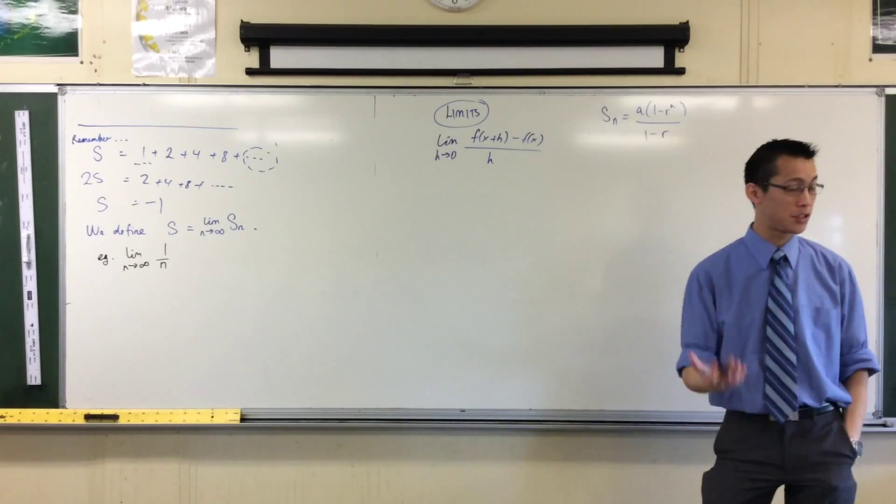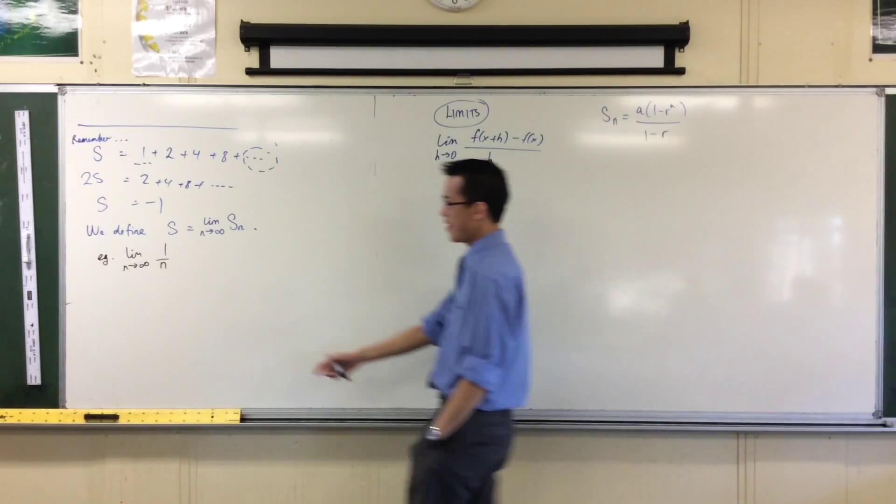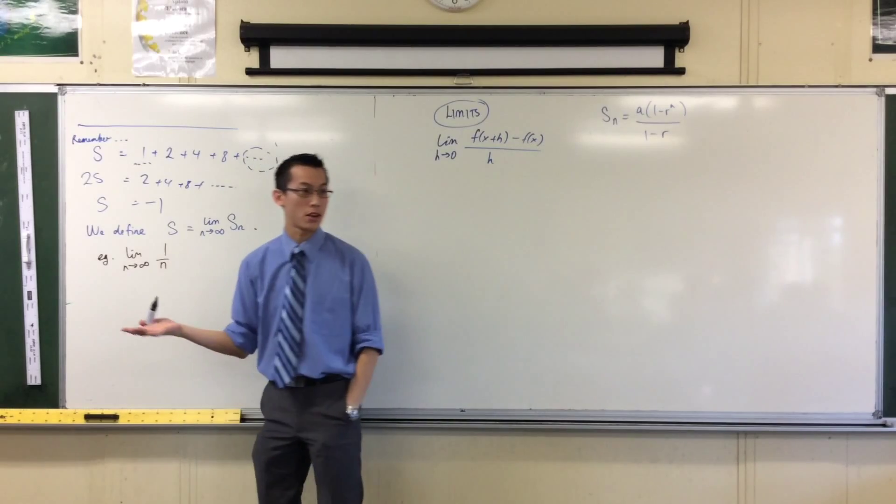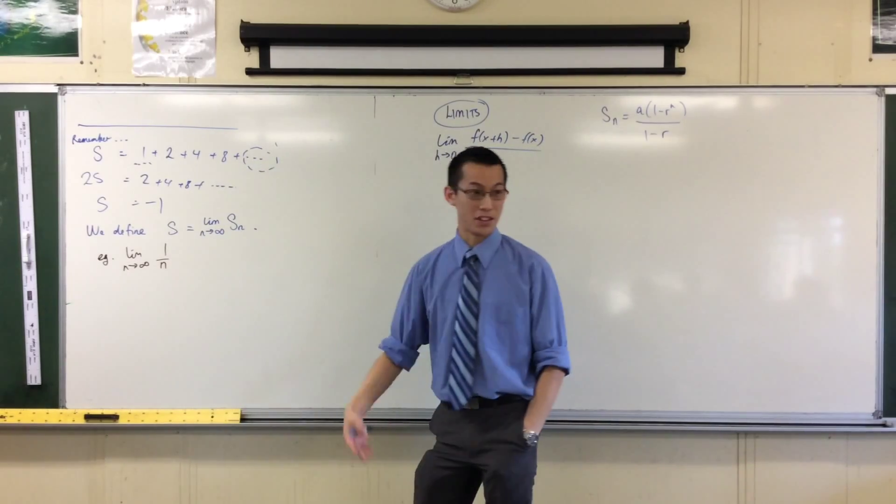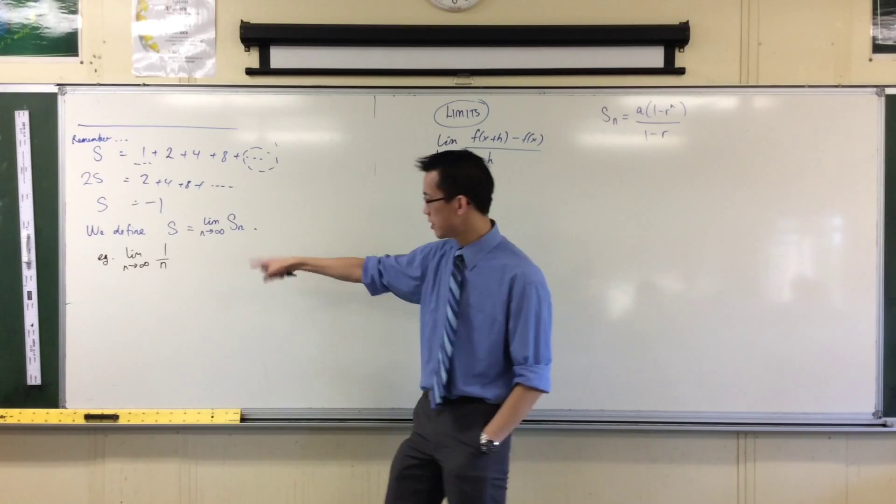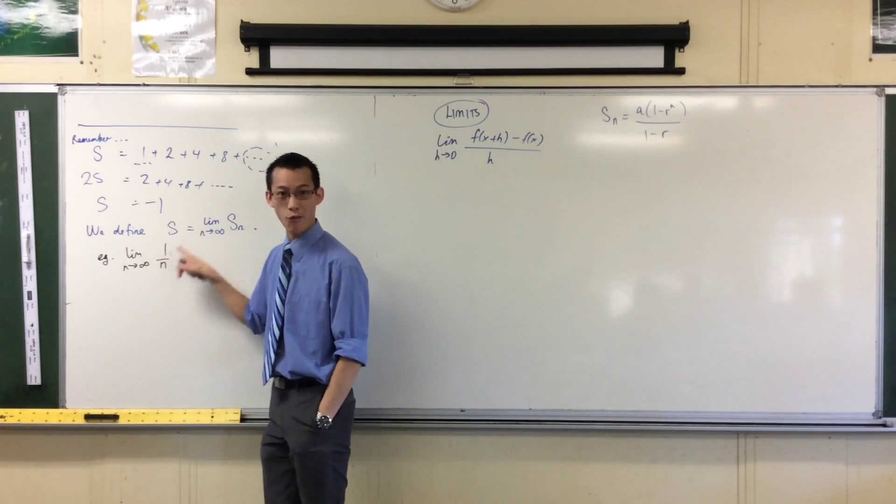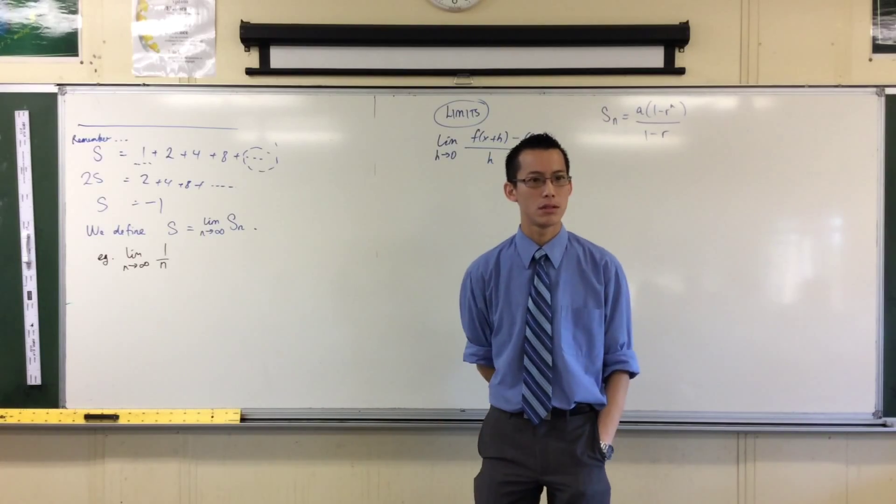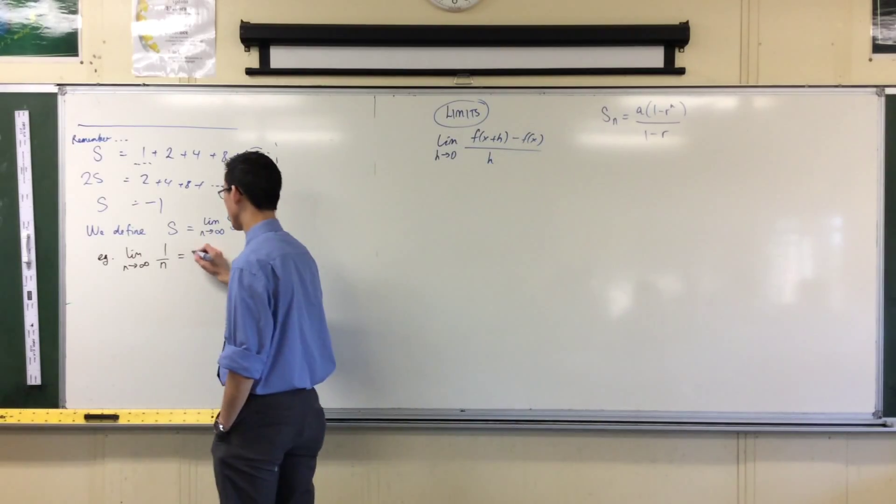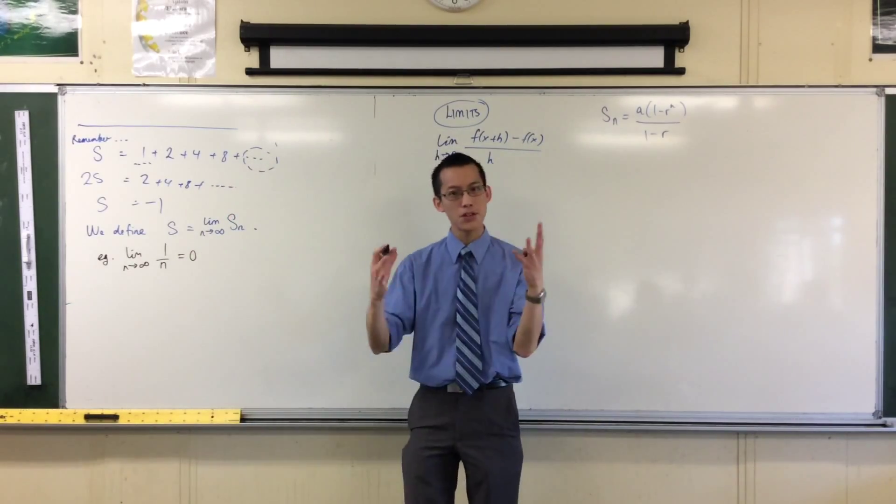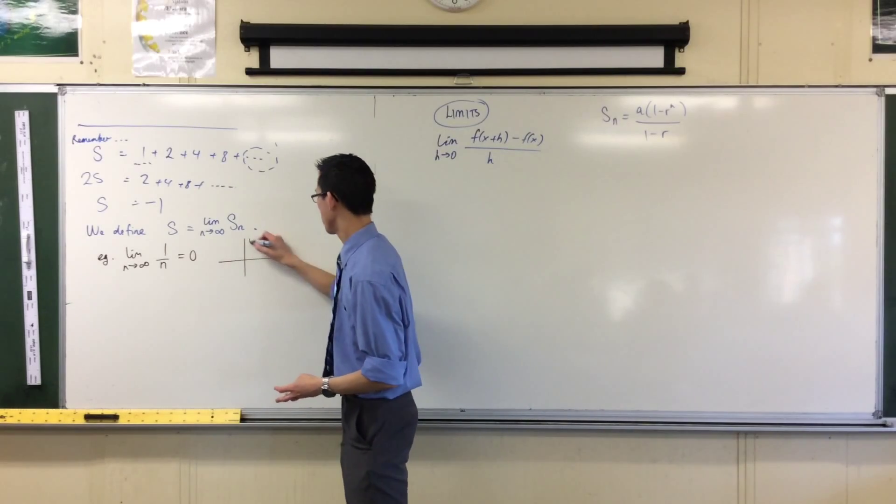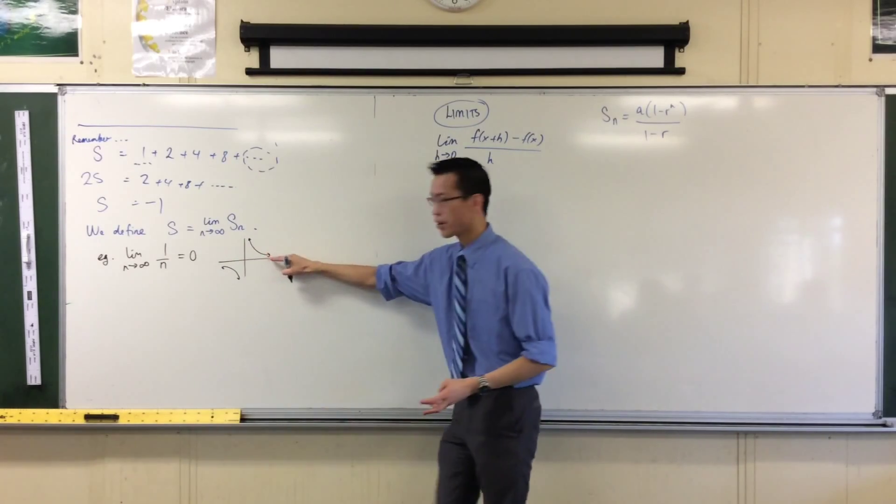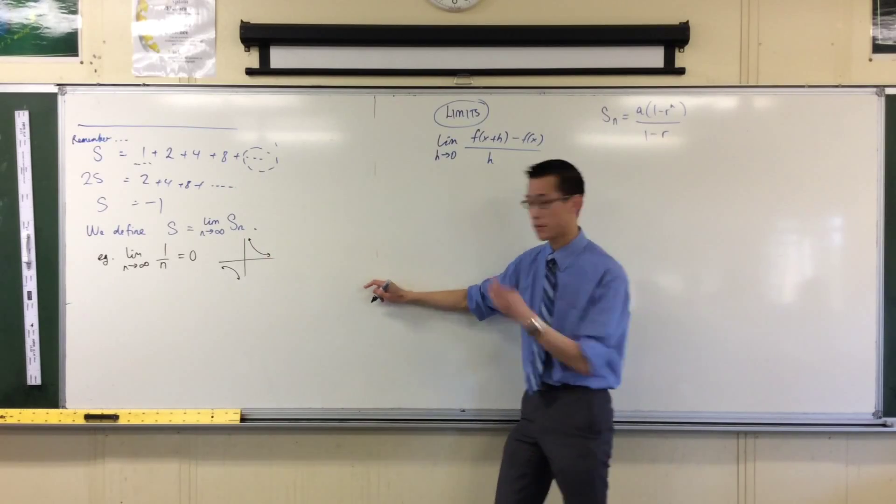This thing here, it's not a partial sum anymore. It's imagining what happens to those partial sums as I just add more and more, and arbitrarily more terms. Does that make sense? So, very subtle difference. Good morning. Please make sure that you pay attention to when you write S, which is this thing going to infinity, and when you write S sub n, which is a partial sum.